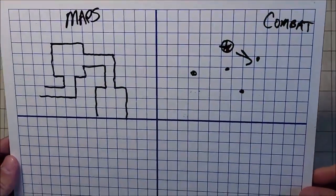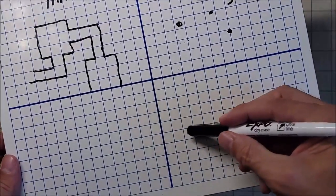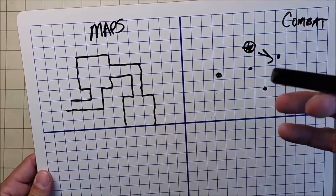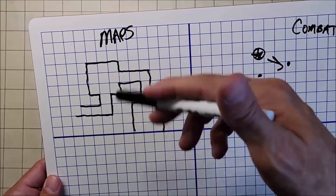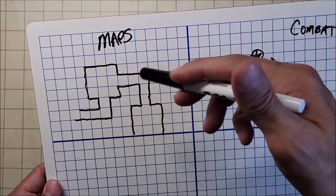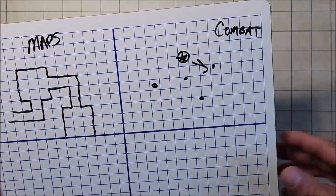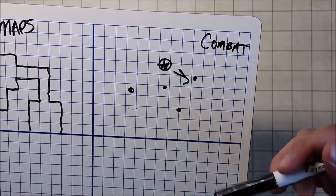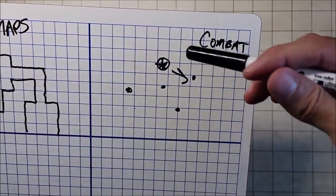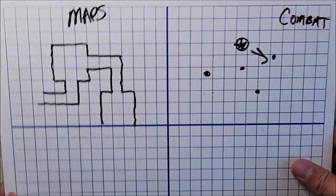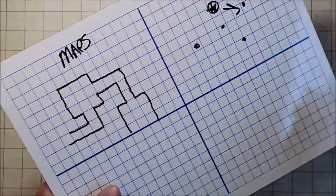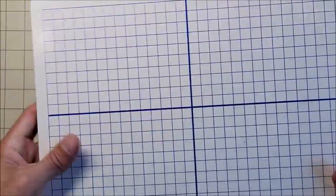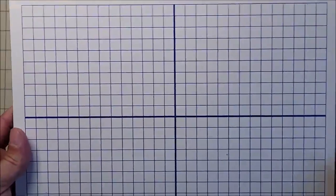I also carry with me this dry erase board that has grid squares on it. I like to use that if I'm playing a lot of theater of the mind — sometimes I do have to draw out a map for the players. And of course, if I'm running theater of the mind and I need to give a little idea of what combat might be taking place, I can draw that out as well. With dry erase boards, they clean up really nicely. I've found it to be a very good tool.